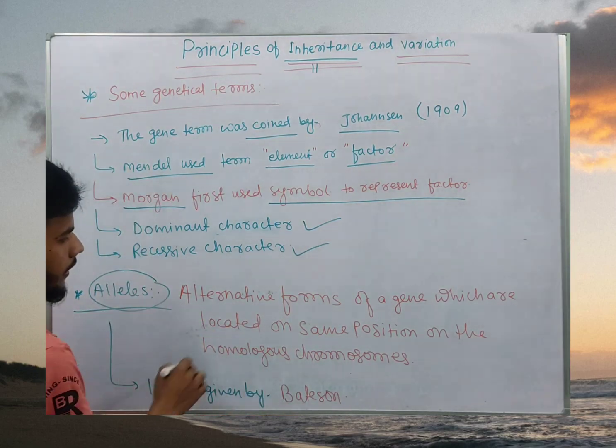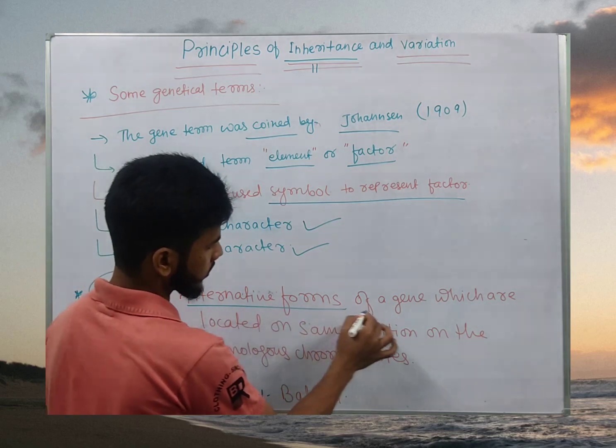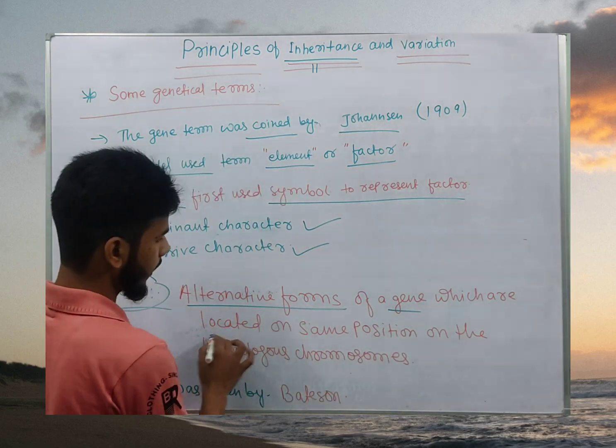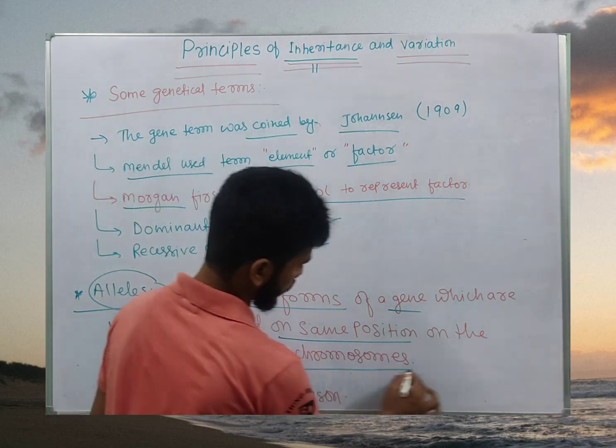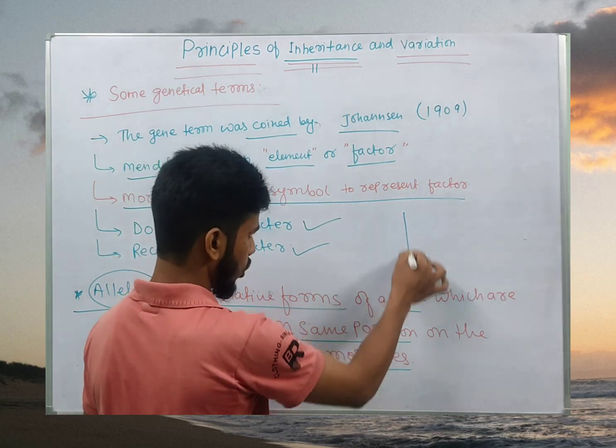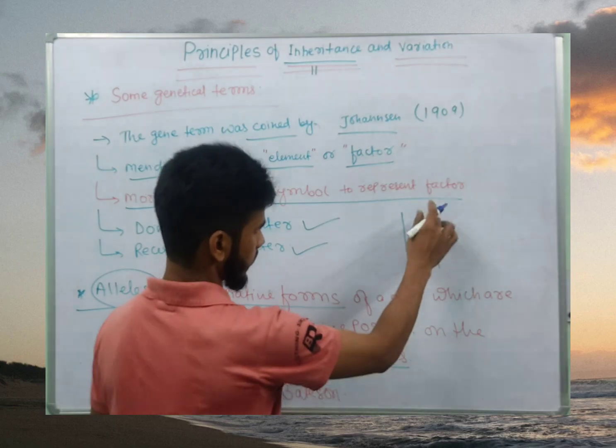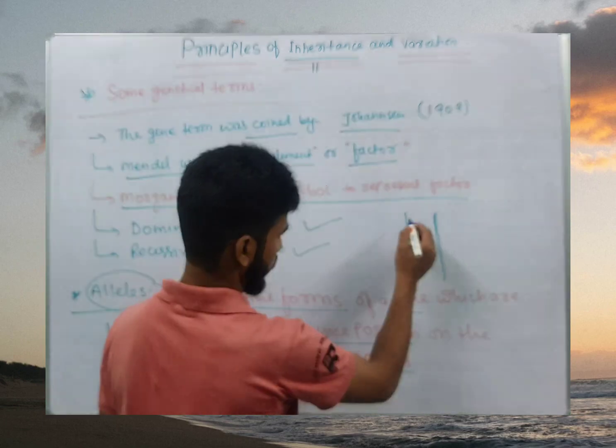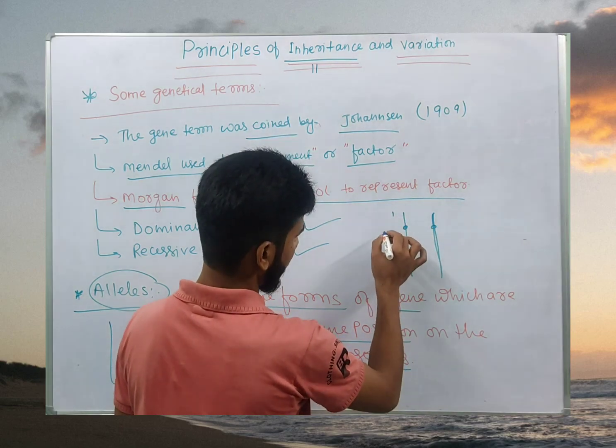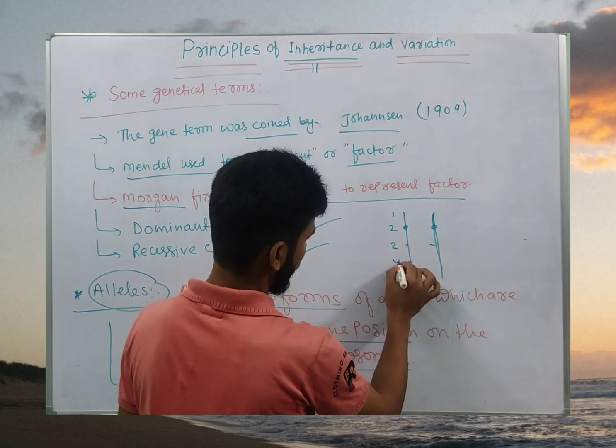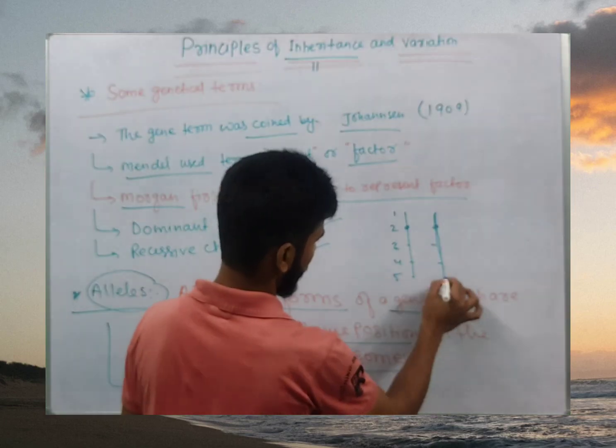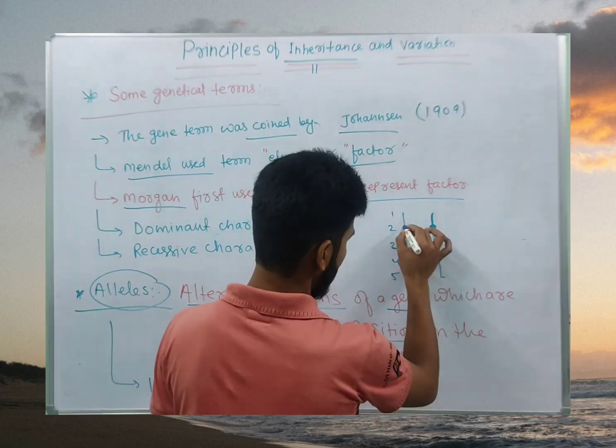In next term, we have Allel. It is the alternate forms of a gene which are located on the same position on the homologous chromosome. Like this is the homologous chromosome. This is the homologous chromosome. This is the same position, like I am sequencing it like as one, two, three, four, five. Here the position is same.